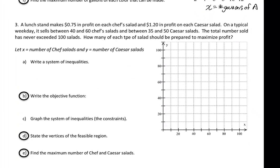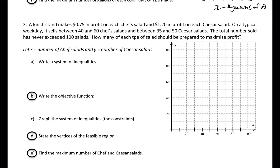The last problem is number three. A lunch stand makes 75 cents in profit on each chef's salad and $1.20 in profit on each Caesar salad. On a typical weekday, it sells between 40 and 60 chef's salads and between 35 and 60 Caesar salads. The total number sold has never exceeded 100 salads. How many of each type should be prepared to maximize profit? We let x be the number of chef's salads and y be the number of Caesar salads.